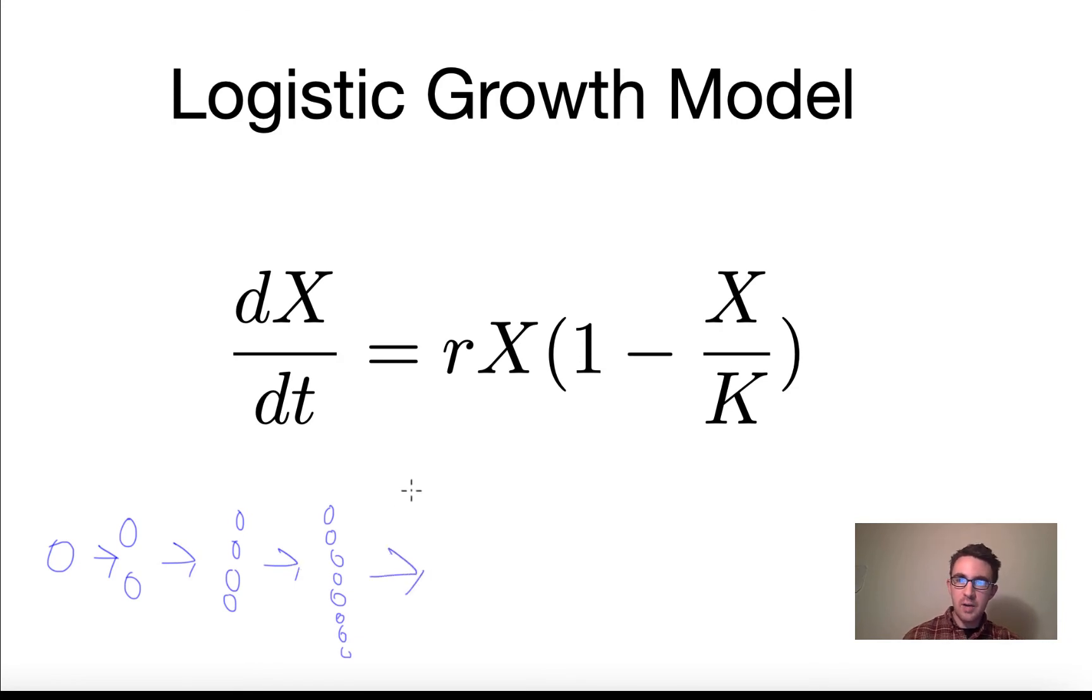Let's just think for a second about how we would model this if it just kept growing exponentially like this, like indefinitely. If the growth never slowed down and it just kept doubling and doubling and doubling, how would we model that?